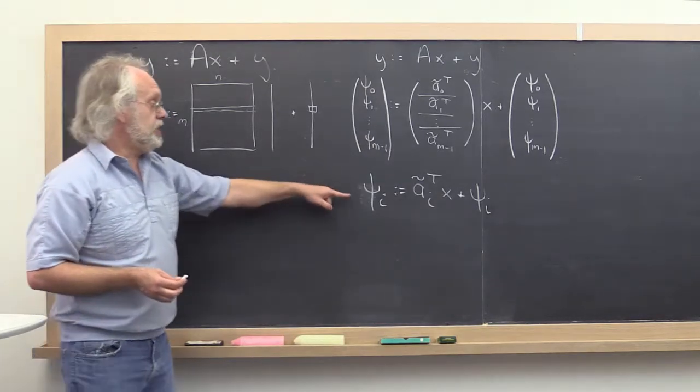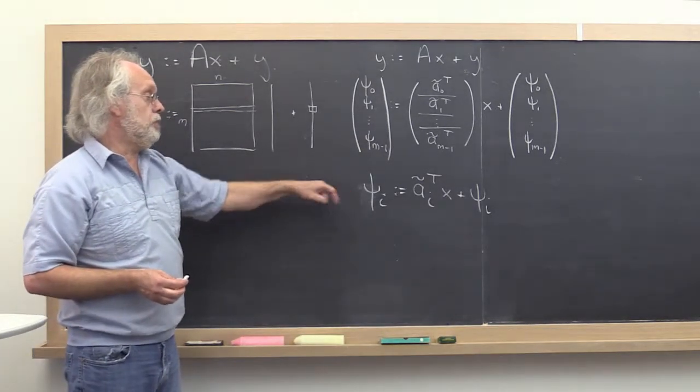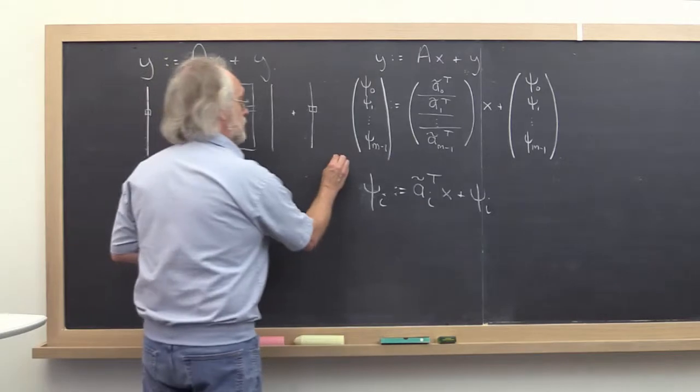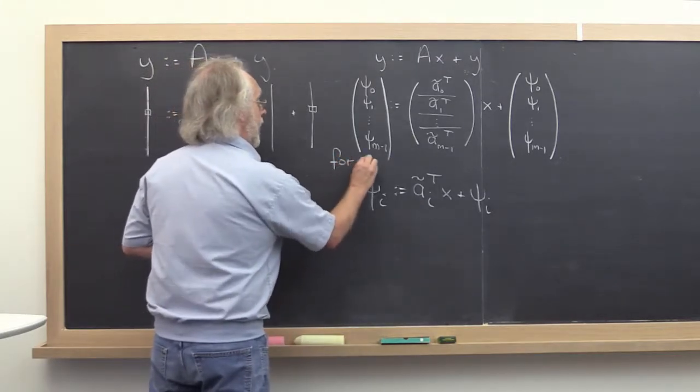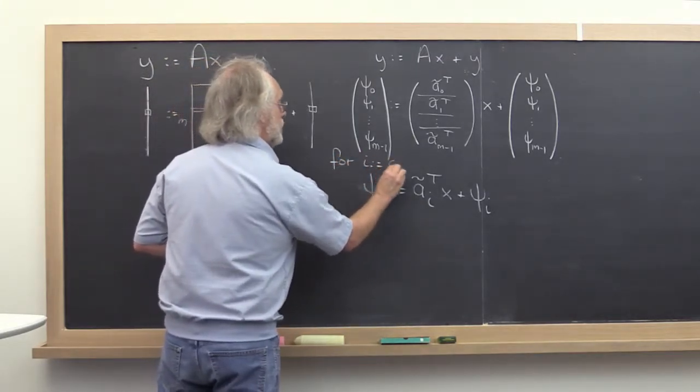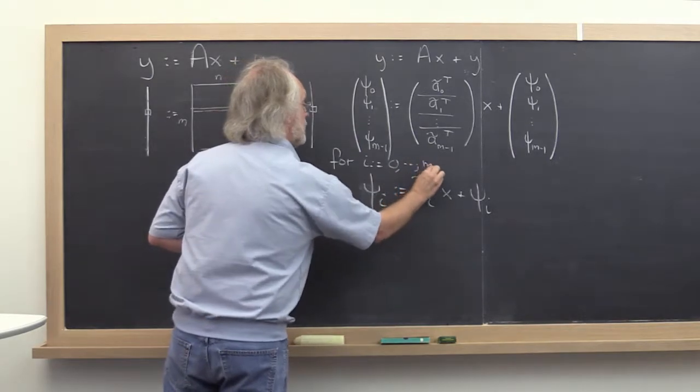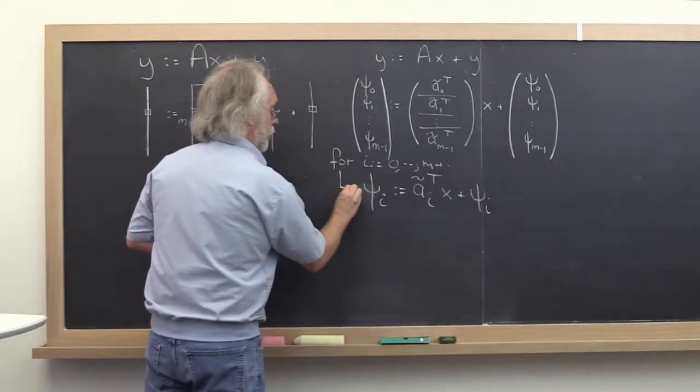And notice that you then want to do a loop around that. So you want to say for i equals 0 through n minus 1, perform this update.